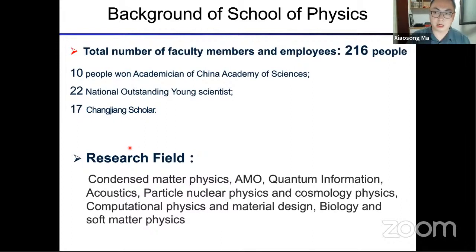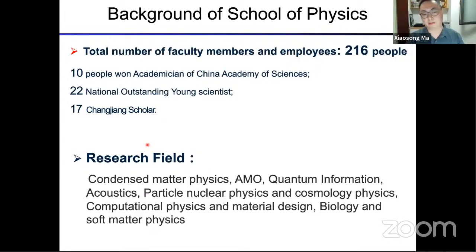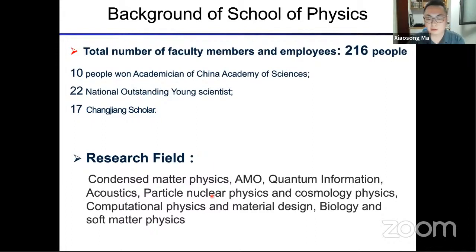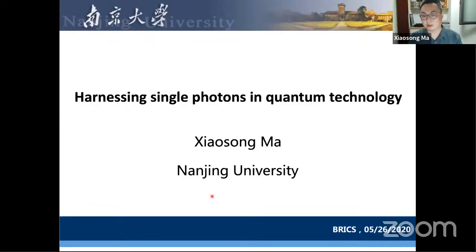Nanjing University is a university with very different disciplines. We have 28 schools and 87 different undergraduate programs. For physics, the Department of Physics at Nanjing University is one of the oldest physics departments and among the finest in China. We established the physics department in 1915, and in 2015 we celebrated its 100-year anniversary. We have 10 members of the Chinese Academy of Sciences and several very prestigious awards in our department.